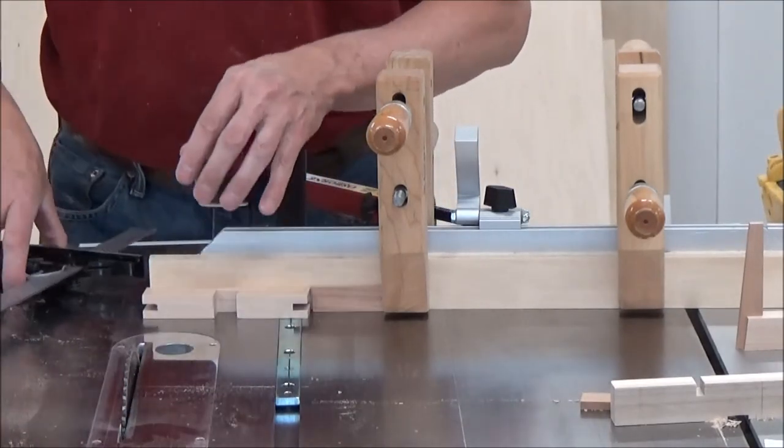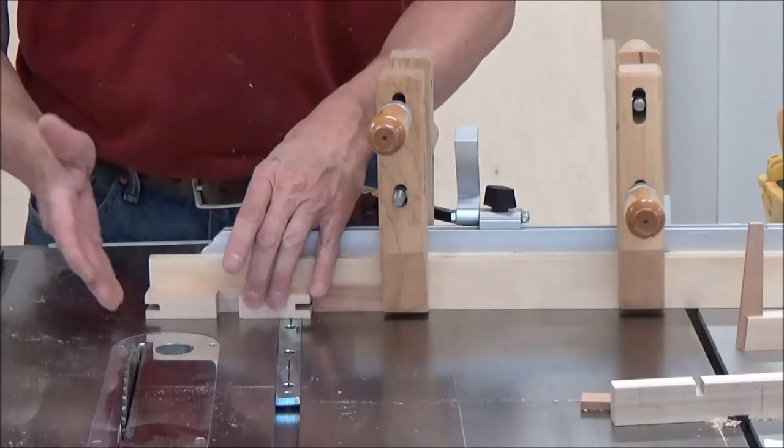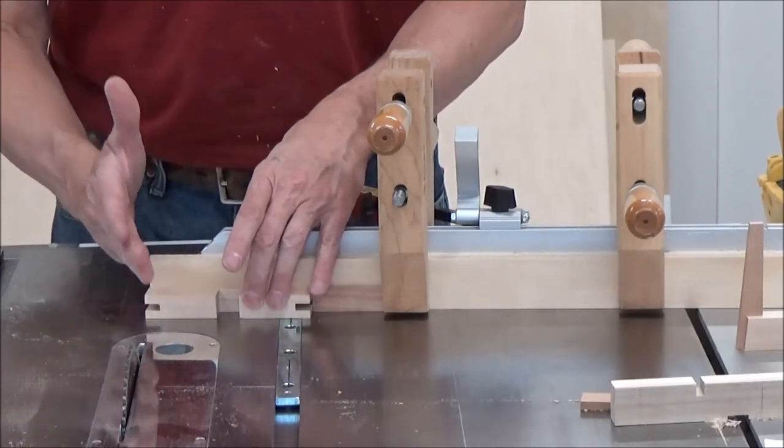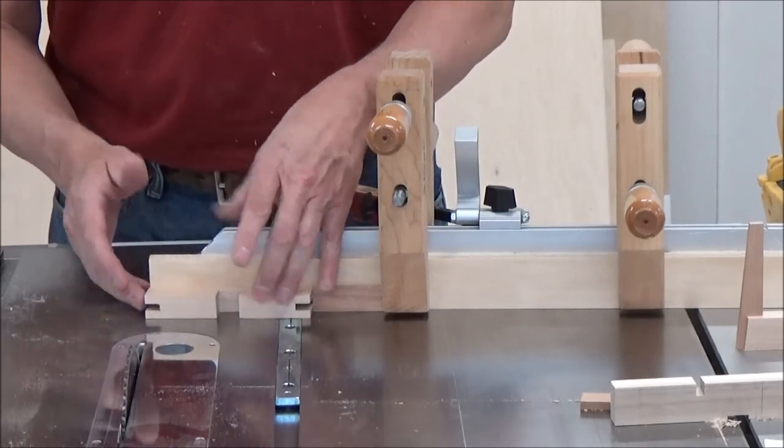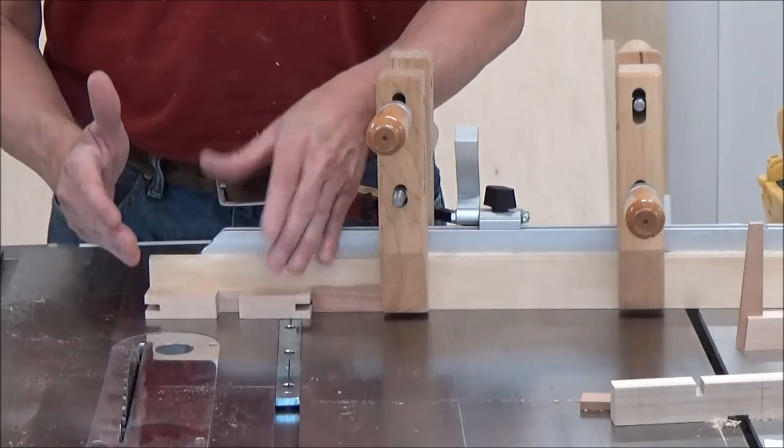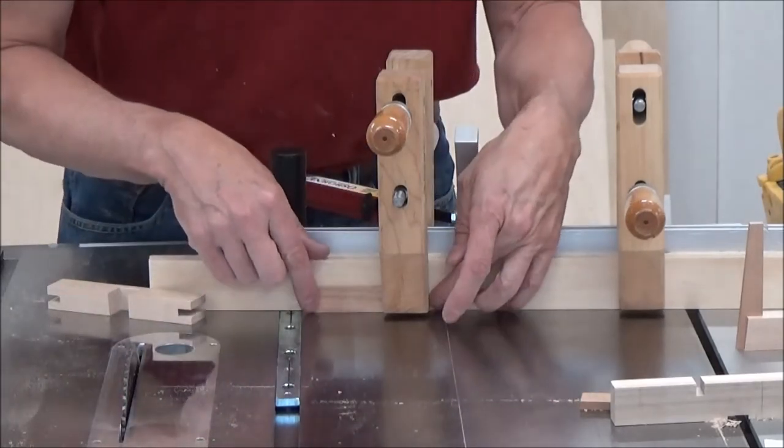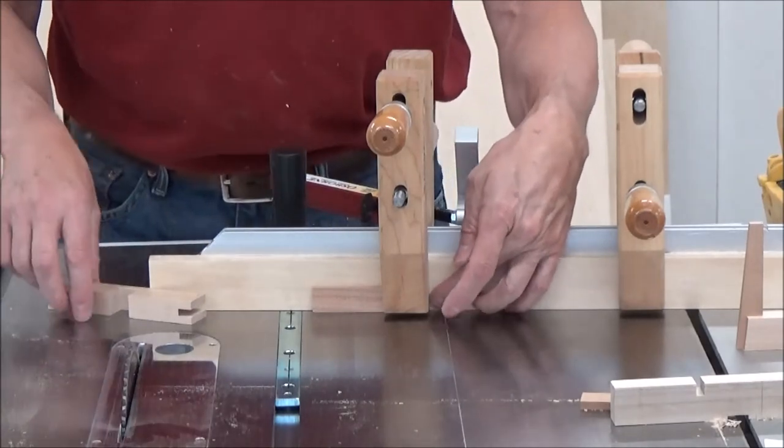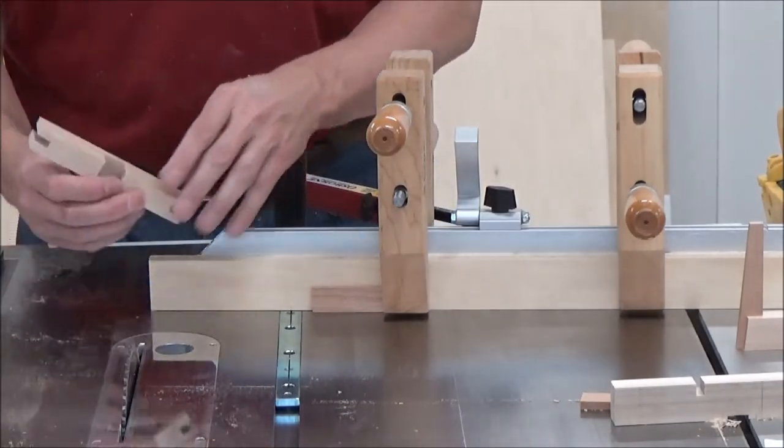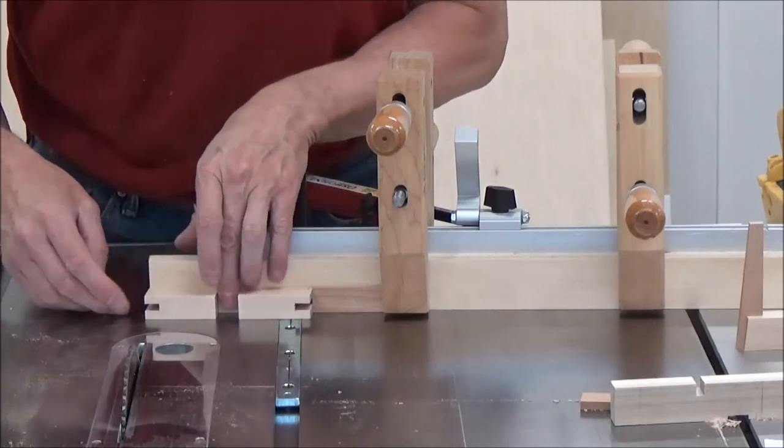So that's the other thing I was going to tell you as long as I'm jabbering here. I'm going to cut these all single sides first, and then when I flip them I'll reset my stop. This side of the stop is cut to this taper, so that'll match up identical.